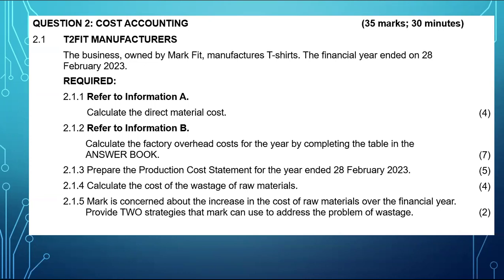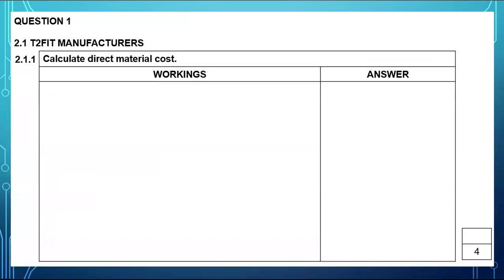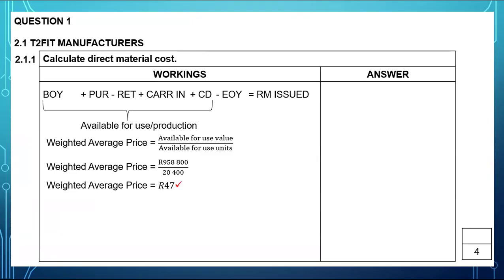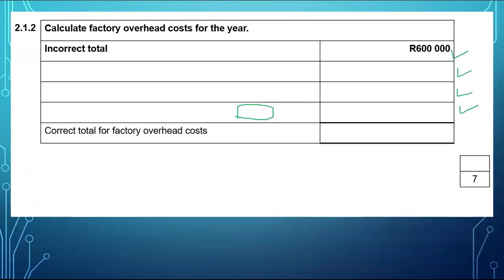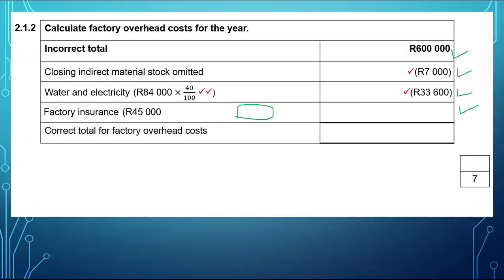I need to bring to your attention what we have already done. We have already calculated direct material cost from the second video, which is $888,300. We have already calculated factory overheads, which amounted to $570,650.